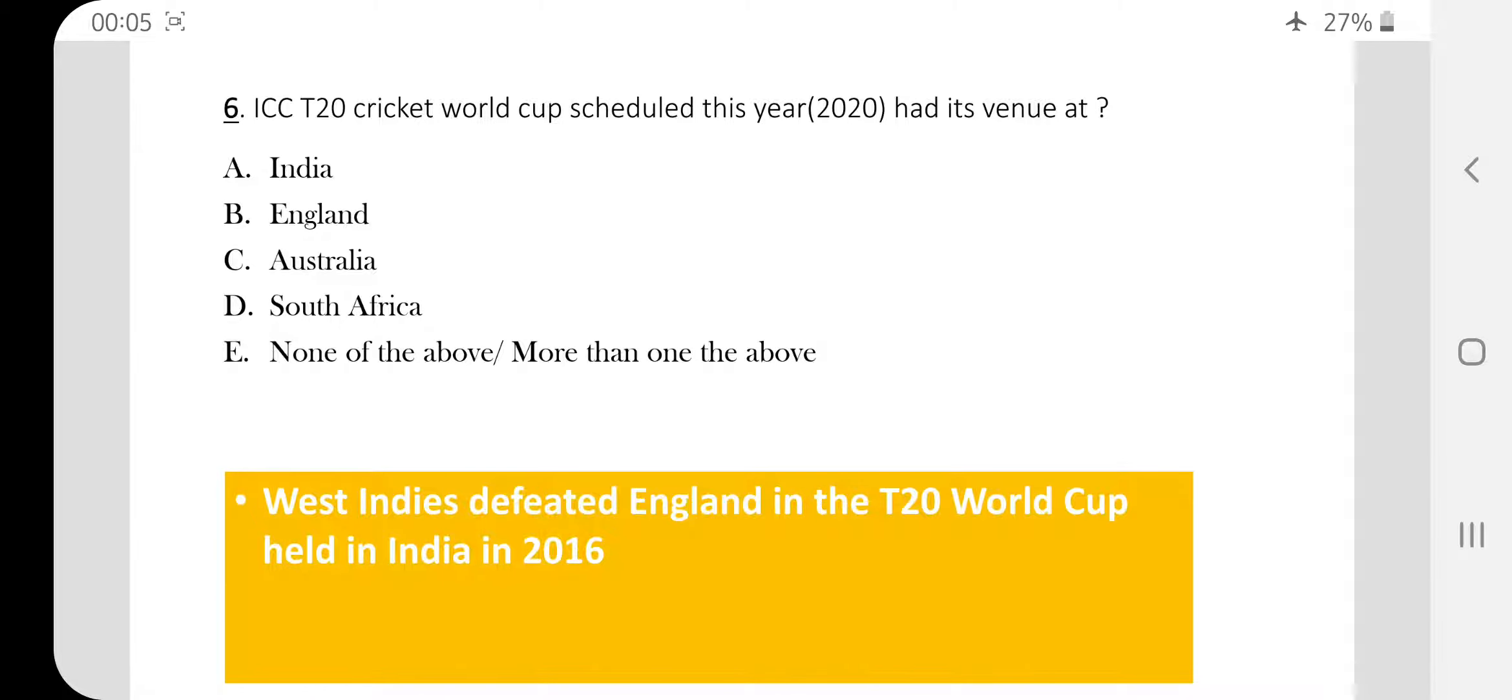Question number six. ICC T20 Cricket World Cup scheduled this year had its venue at. This year T20 Cricket World Cup was supposed to be held in Australia. Last time the cricket World Cup was held in India in 2016. West Indies became champion, defeating England.